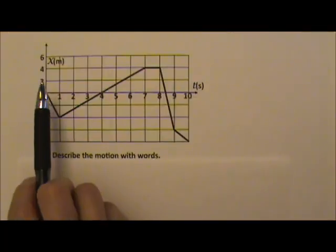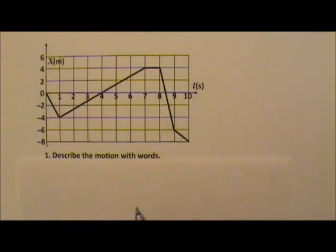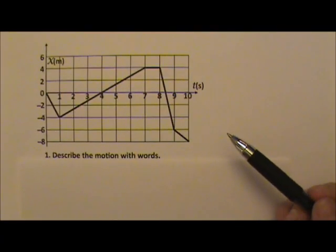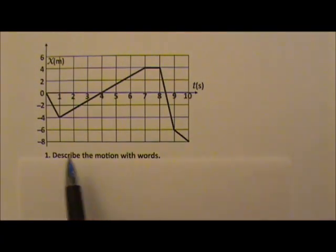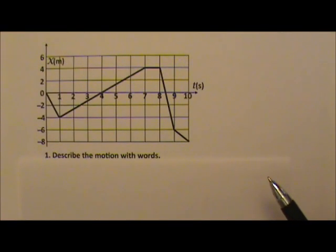We have learned the basics of motion graphs. Now let's do some problems to practice. Here you have a position versus time graph. It is a one-dimensional motion — the object moves along a straight line. See if you can describe the motion of this object with words.